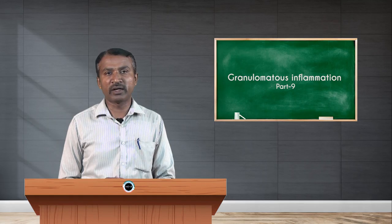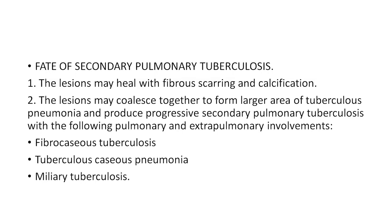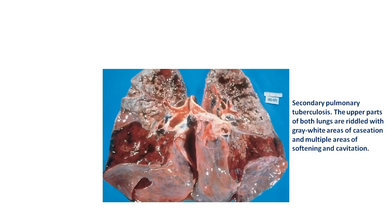Of aerobic tubercle bacilli. The fate of secondary pulmonary tuberculosis: the lesions may heal with fibrous scarring and calcification. The lesions may coalesce together to form a larger area of tuberculosis pneumonia and produce progressive secondary pulmonary tuberculosis, with the following pulmonary and extra-pulmonary involvements: fibrocaseous tuberculosis, tuberculous caseous pneumonia, and miliary tuberculosis.